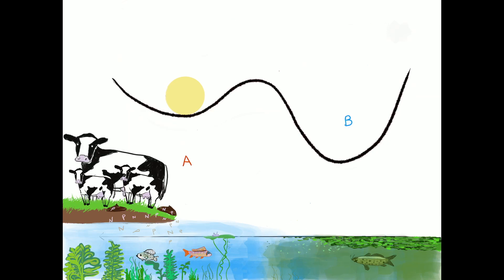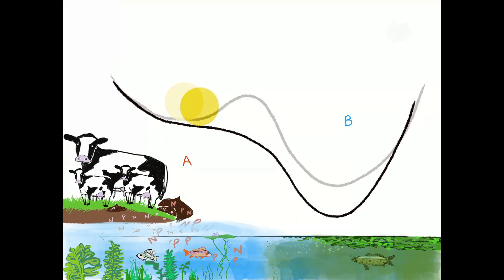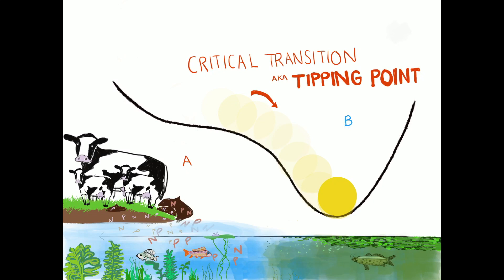Now, if resilience decreases even more, the stable state disappears, and the system will suddenly flip into a new state.